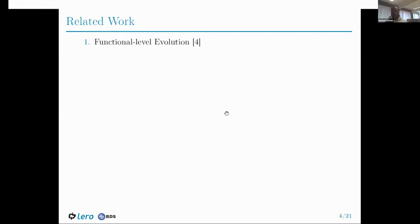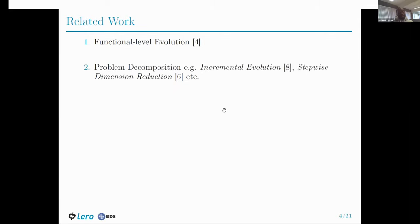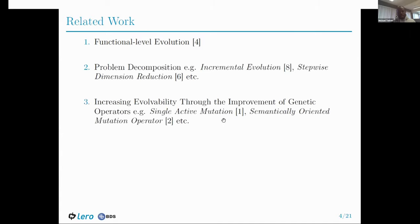In response to the challenges facing evolvable hardware for designing complex circuits, several directions have been taken. The first is functional evolution, where instead of using primitive logic gates such as AND and NOT, you use higher-level building blocks like half-adders, multiplexers, and 2-bit multipliers to design circuits. Results show that these approaches do outperform gate-level evolution, sometimes in fewer generations. Other approaches have been to develop decompositional methods that help decompose complex problems, making them more tractable for evolutionary algorithms. Other directions have been to improve genetic operators and in doing so increase evolvability.